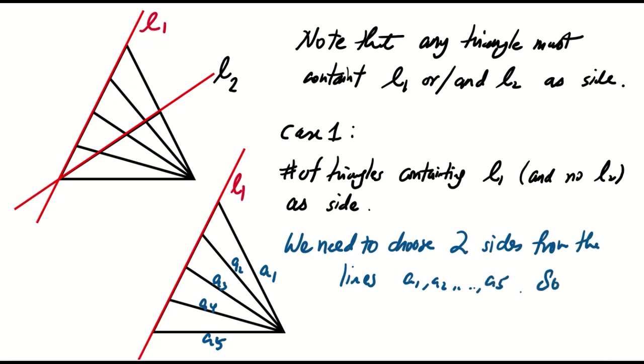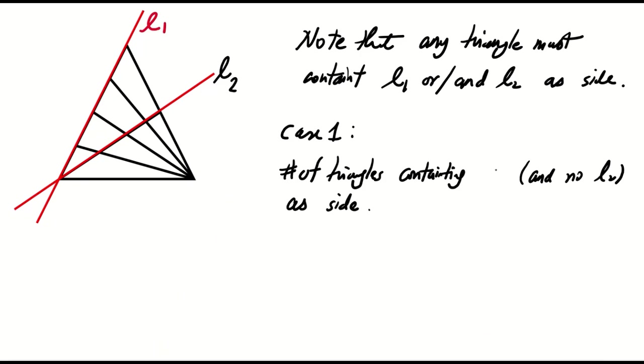There are 5 choose 2 ways to select the remaining sides. Since 5 choose 2 equals 10, there are 10 triangles in case one. Case two is similar to case one, but we switch the roles of L1 and